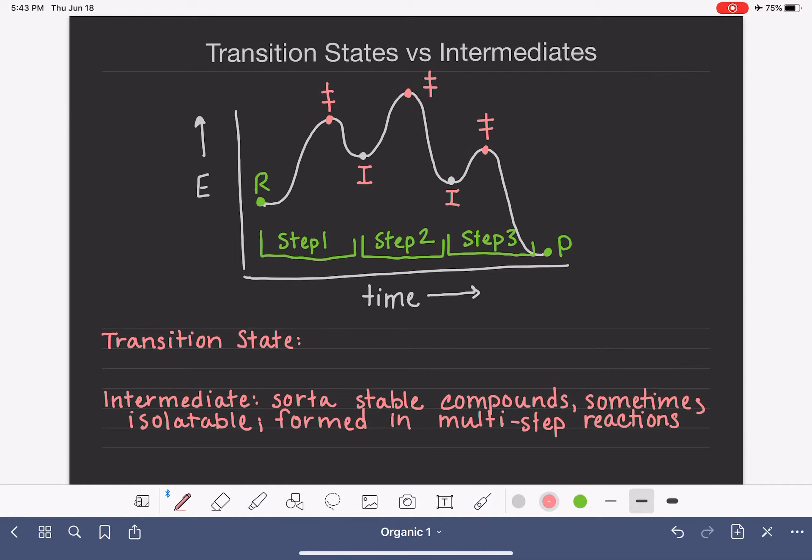And transition states also exist in single step reactions. So you might have learned about transition states in general chemistry as well. Even though a single step reaction doesn't have an intermediate, it still has a transition state. The transition state is the high point in a step or the high point in a single reaction where the reactant has finally achieved or absorbed enough activation energy that is able to continue on to the next step in the reaction.